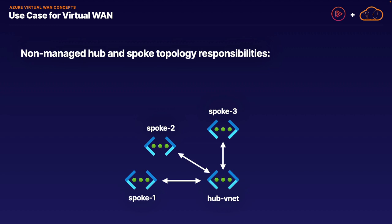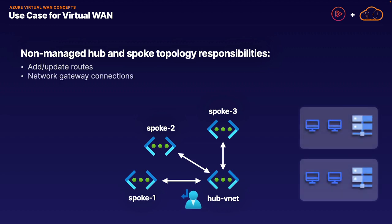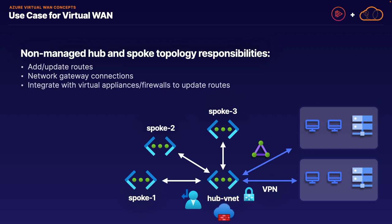For example, when working with a non-managed hub-and-spoke topology, you are 100% in charge of adding and updating routes across all your different virtual networks. You are in charge of creating and managing your various network gateway connections, whether it is a point-to-site or site-to-site VPN or an ExpressRoute connection. You are also in charge of integrating and deploying different network virtual appliances or the Azure Firewall service, and updating the routes through those appliances for all your individual virtual networks. The main advantage is that Virtual WAN makes all these tasks comparatively a whole lot easier.